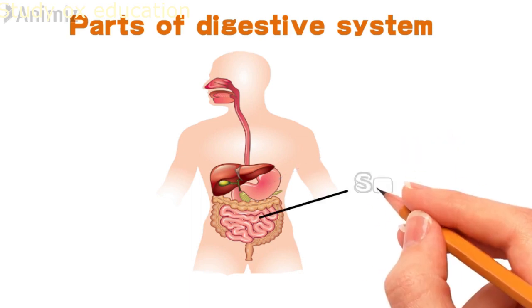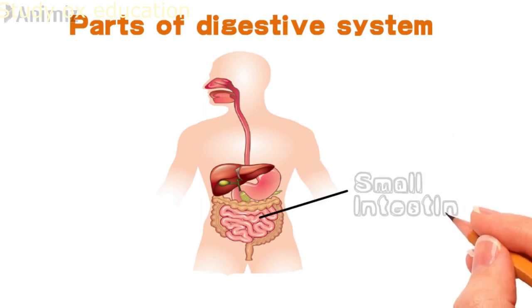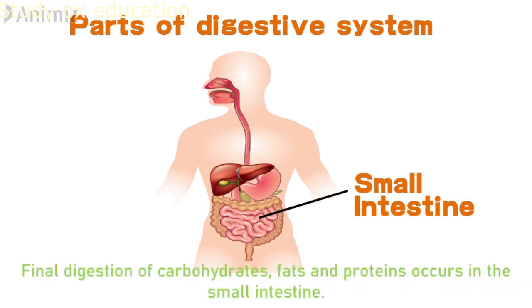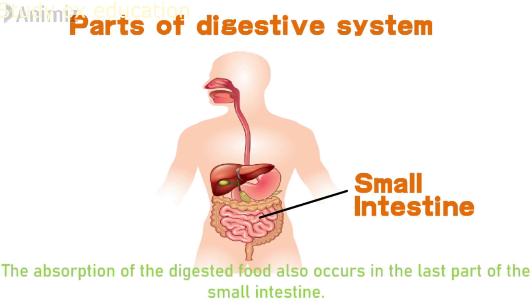Next is the small intestine. As food leaves our stomach, it passes into the small intestine. Final digestion of carbohydrates, fats, and proteins occurs in the small intestine. The absorption of the digested food also occurs in the last part of the small intestine.